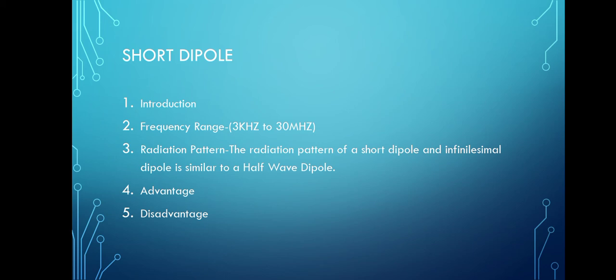The frequency range of the short dipole: the range of frequencies in which the short dipole operates is around 3 kHz to 30 MHz. It is mostly used in low-frequency receivers.